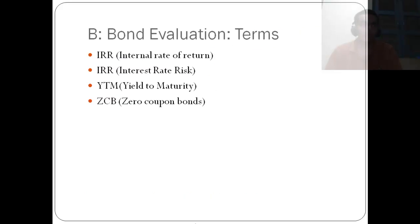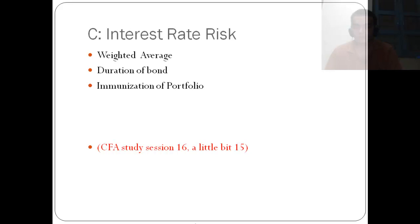In the bond evaluation, we have these four terms which are often seen and the questions on them: the internal rate of return, the interest rate risk, the yield to maturity, and the zero coupon bonds. There are some questions which require the weighted average for the zero coupon bonds and the weighted average to find out the interest rate risk.